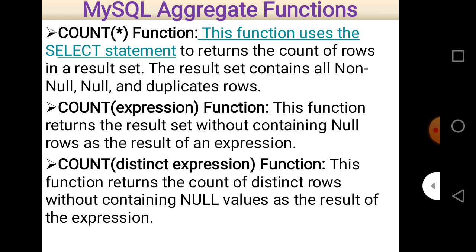The idea is simple: when you use COUNT(*), it counts each and everything whether null or not null. When you use COUNT(expression), it does not count null values. When you use COUNT(DISTINCT expression), it removes duplicate values and counts them as a single value. According to the need and circumstances, we use different types of COUNT functions in MySQL.